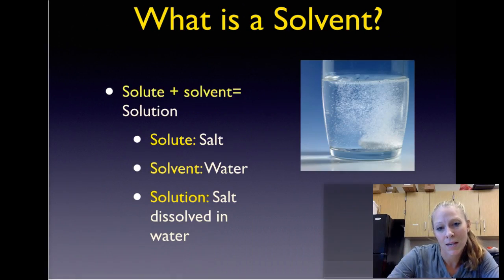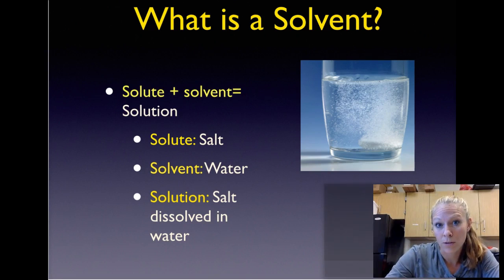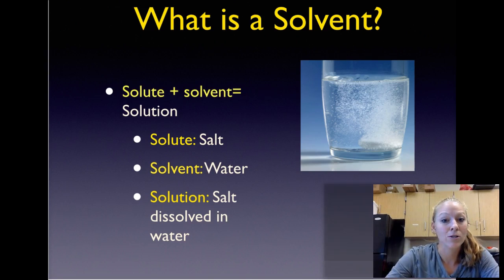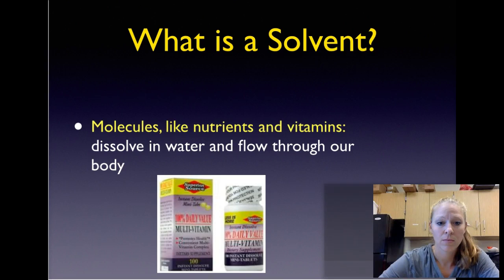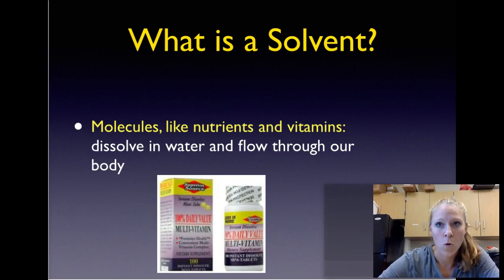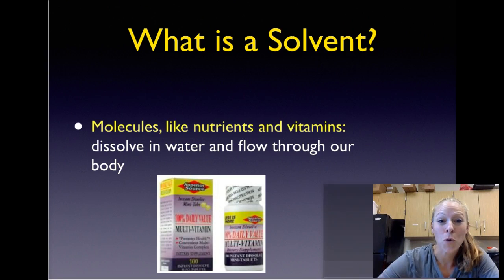The second reason we said that water is important is because it's a universal solvent. A solute and a solvent make a solution. If we had a saltwater solution, the solute would be the salt, the solvent would be the water, and the solution would be the salt dissolved in the water. This is important for organisms because molecules like nutrients and vitamins dissolve in water and flow through our body. We need water to break nutrients down into their smallest pieces and move them throughout our body.